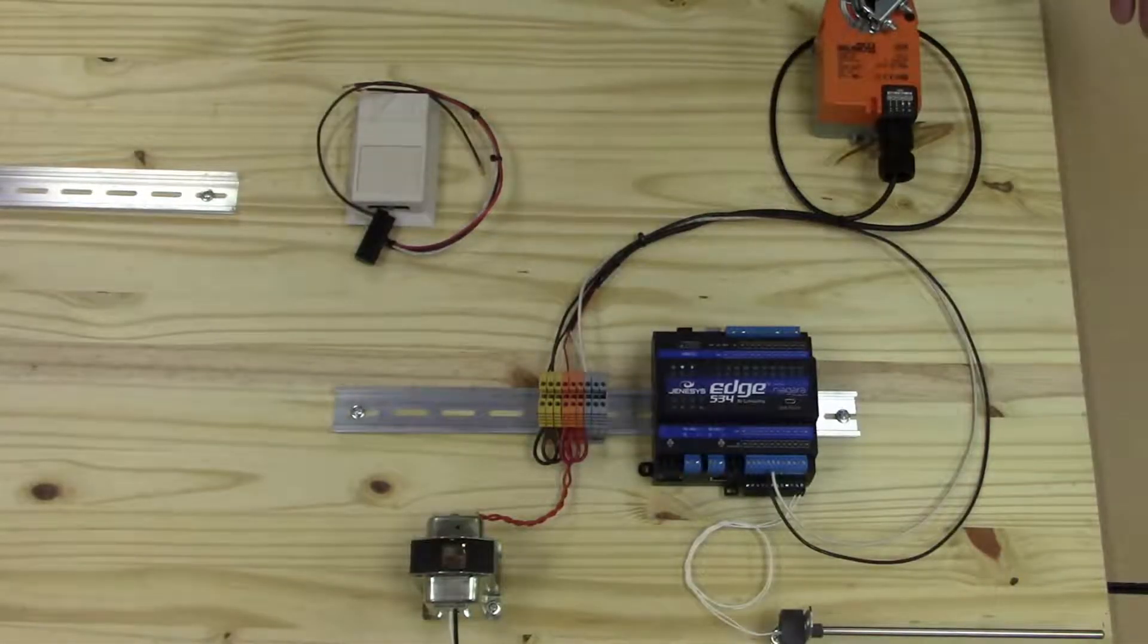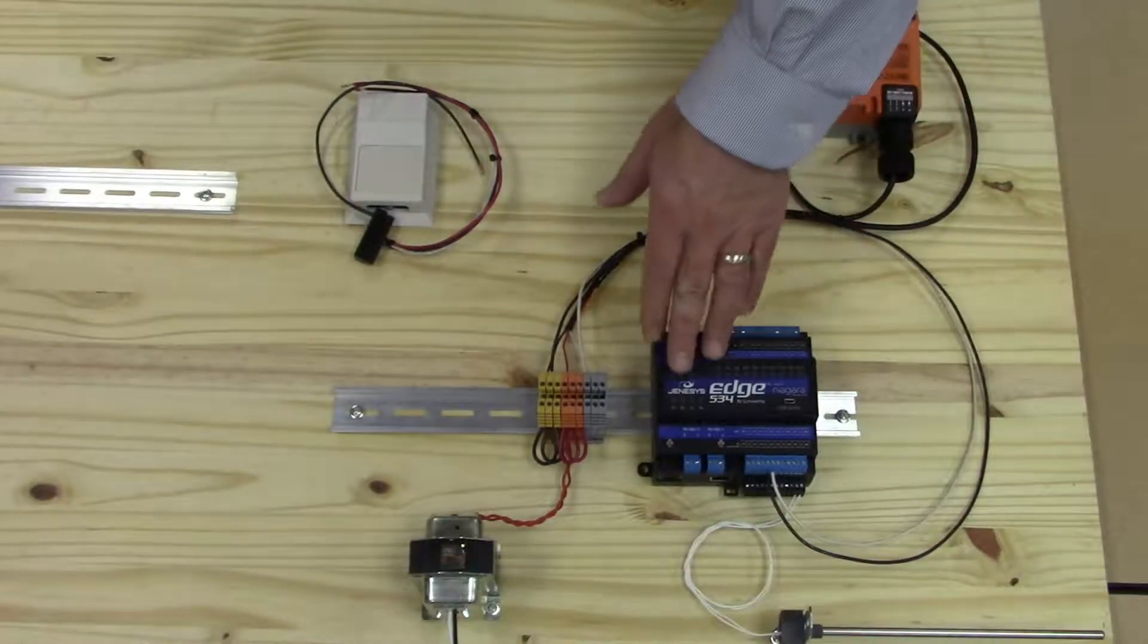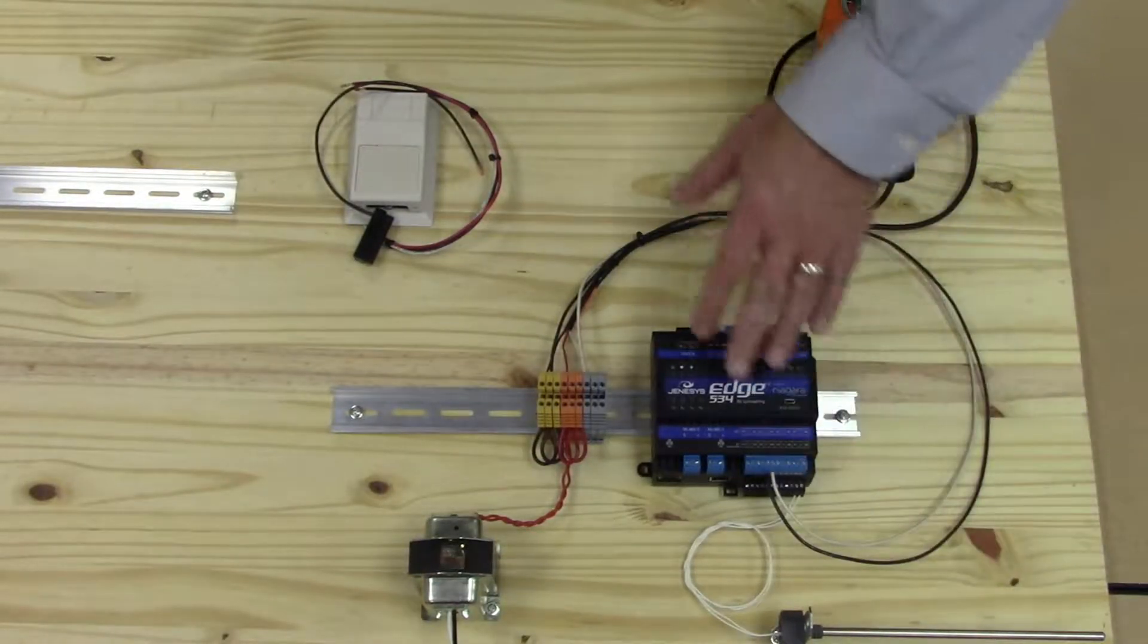Today we're going to demonstrate how to wire a damper actuator to a Genesis Edge 534 controller and also a two-wire thermistor to the controller.